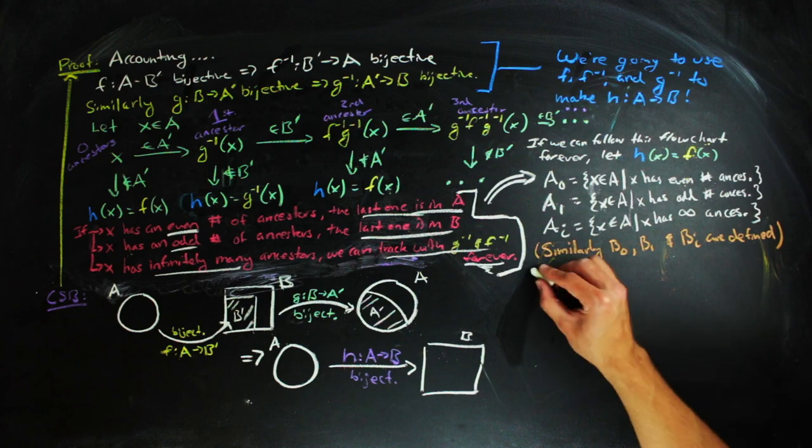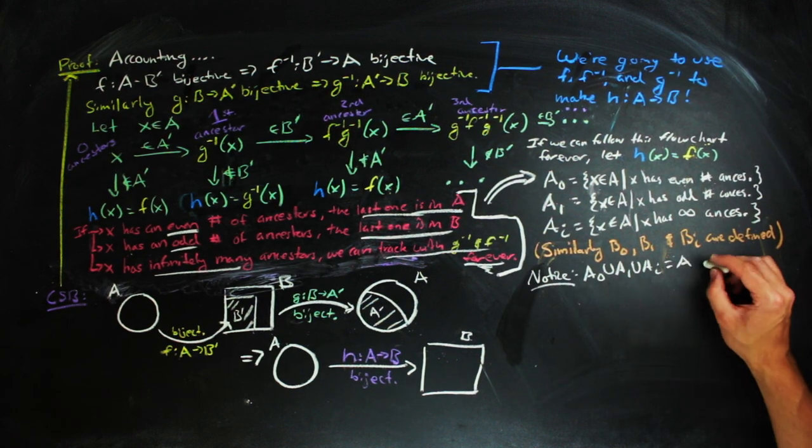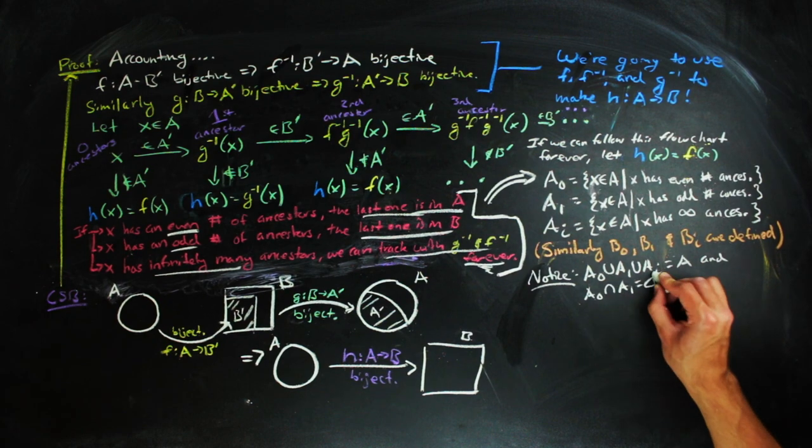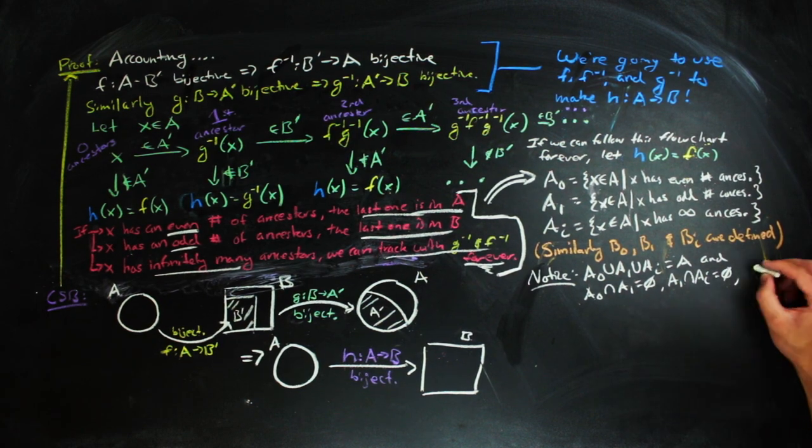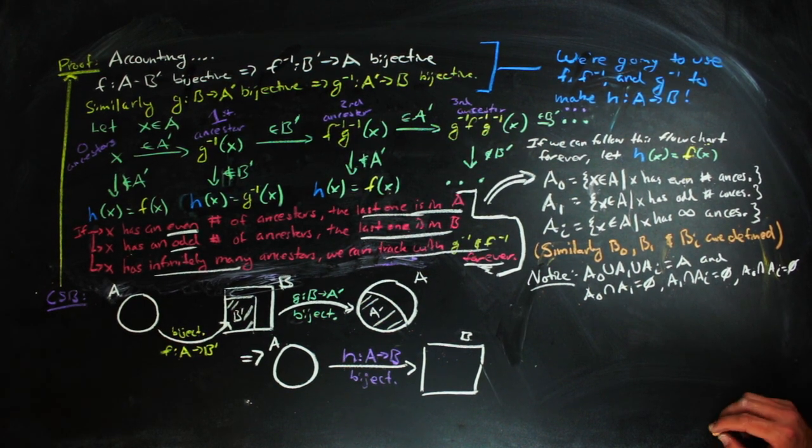By these constructions, we know that A sub i, A sub 0, and A sub 1 make up all of A. That means if you take their union, you'll get everything in A. And they're also pairwise disjoint. So if you intersect any pair of them, you're going to get the empty set. And we can say the same exact things about B sub i, B sub 0, and B sub 1.